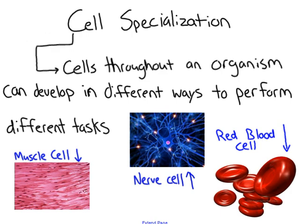The last term we need to define today is cell specialization, which is only found in eukaryotic cells. The definition is: cells throughout an organism can develop in different ways to perform different tasks. I'm going to use examples from the human body since that's what we're most familiar with.